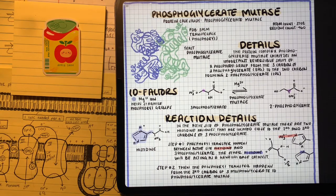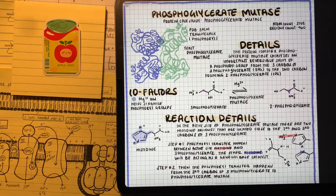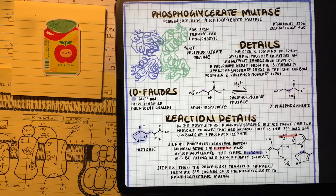The next enzyme complex is phosphoglycerate mutase. This is going to take 3-phosphoglycerate to 2-phosphoglycerate, just moving the phosphoryl group from the third carbon to the second carbon.